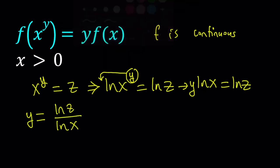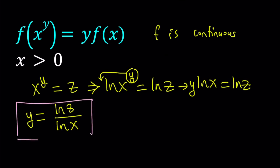Cool. This is my y value and I'm going to use it in the original expression. Replace x to the power y with z, so it becomes f of z equals y will be replaced with ln z over ln x, and f of x is just going to stay the same. So we have this interesting equation. Hopefully this gives you an idea on what to do.